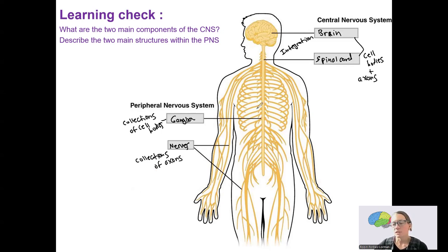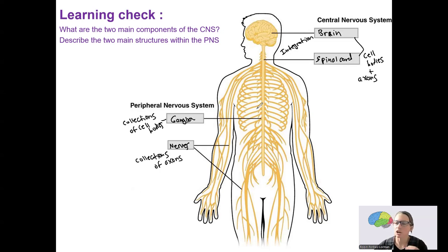So both of these components of the nervous system are physically connected — they're not actually separate things. But we will talk about them separately. We're going to start with the brain, then spinal cord, then go into the peripheral nervous system. Let me emphasize, though, that connection.